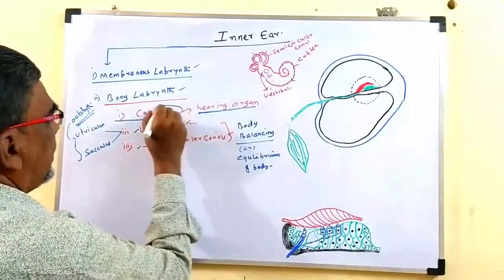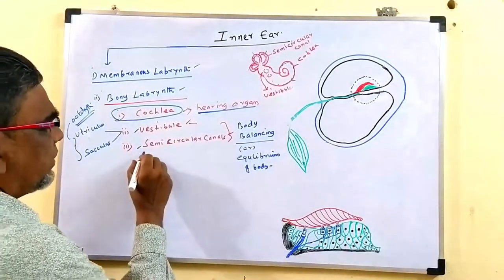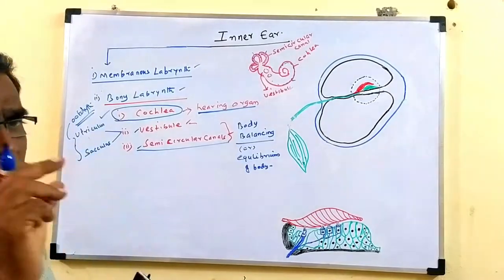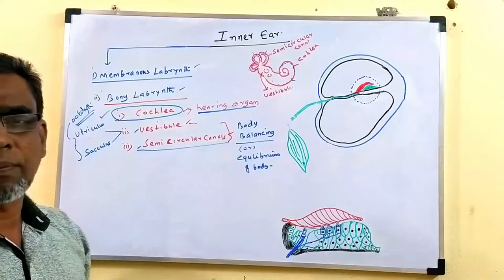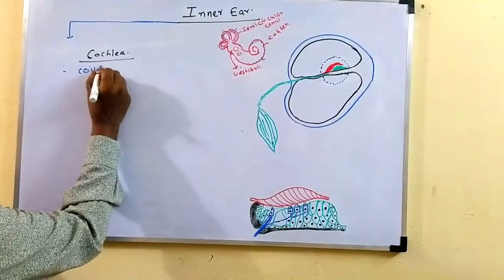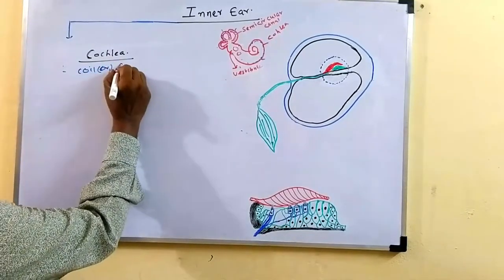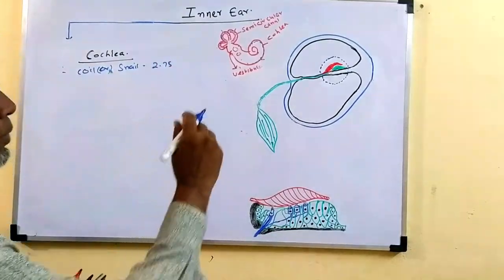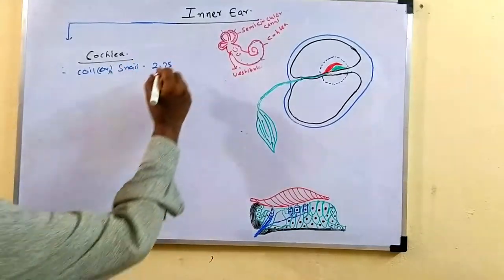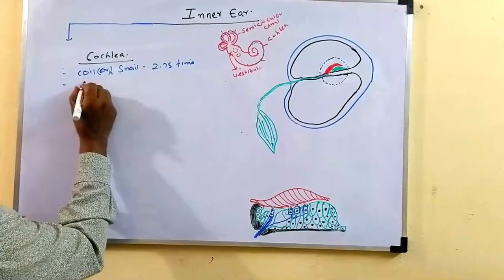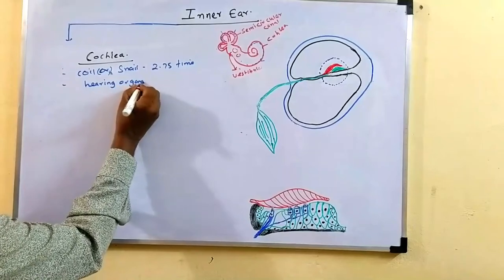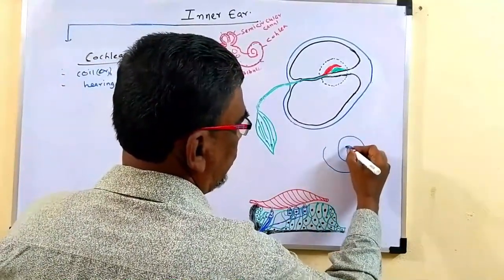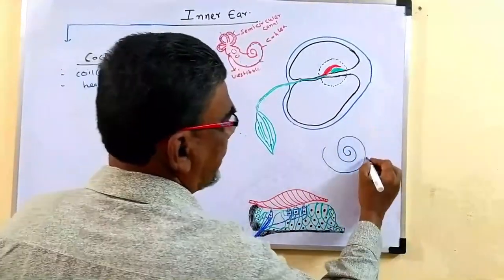We will first see the structure of Cochlea, then discuss the vestibule and semi-circular canals. The Cochlea is a coil-like or snail-like structure forming 2.75 circles. It is the actual sensory hearing organ.